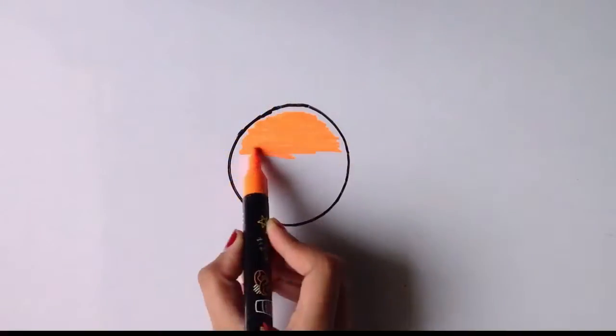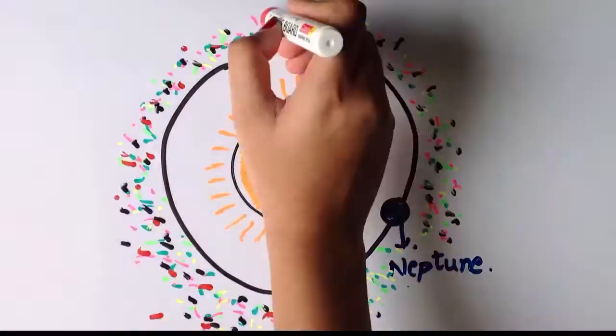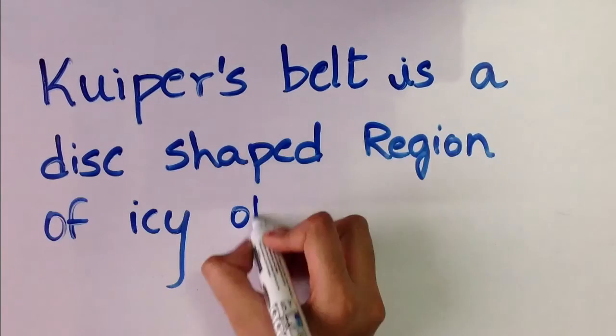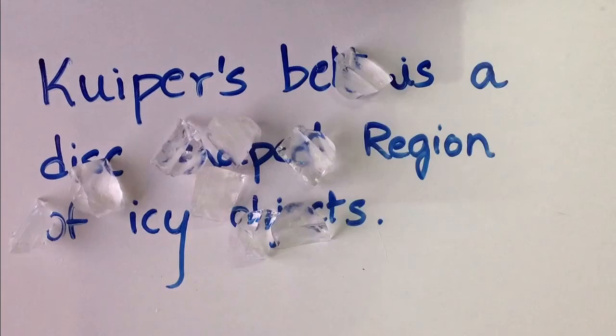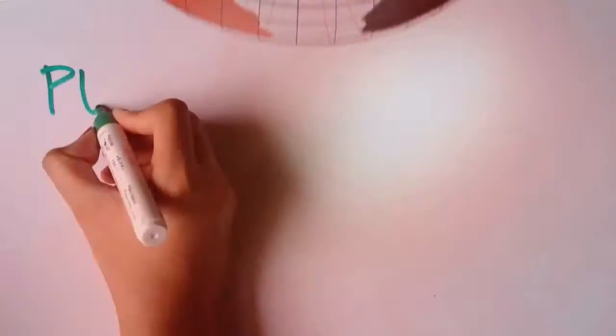To know the answer to this question, we need to go beyond the orbit of Neptune. After the orbit of Neptune, there is a belt of icy objects known as the Kuiper's belt. Pluto is just an object in the Kuiper's belt. It was visible to us earlier than others were.